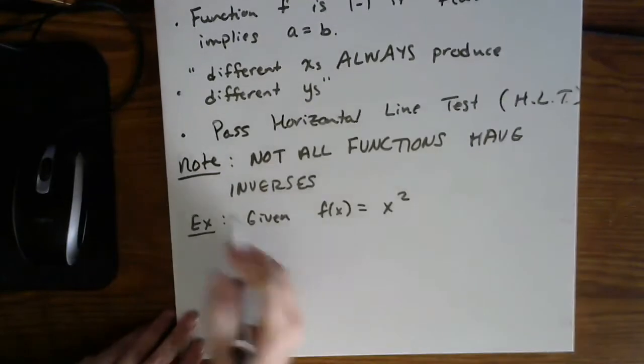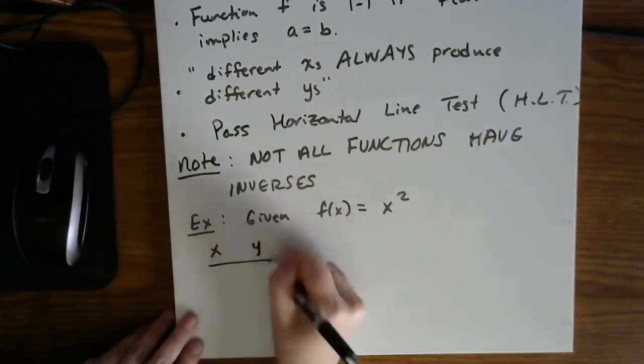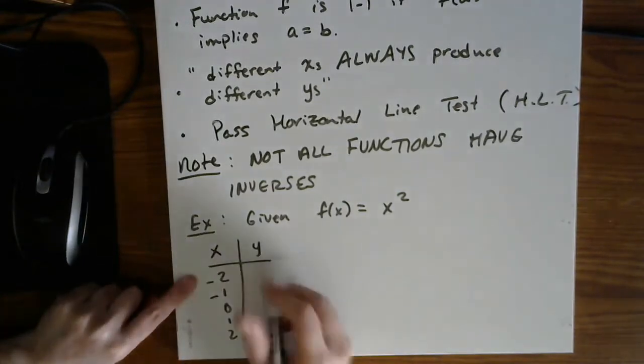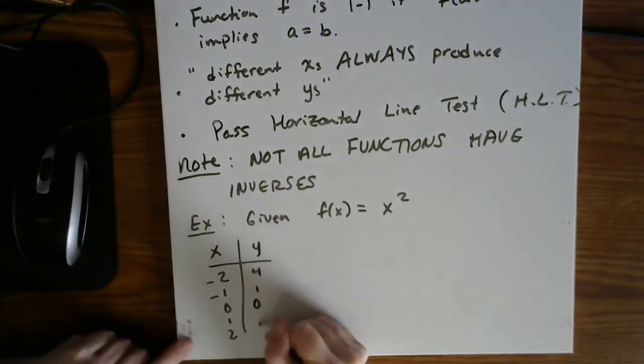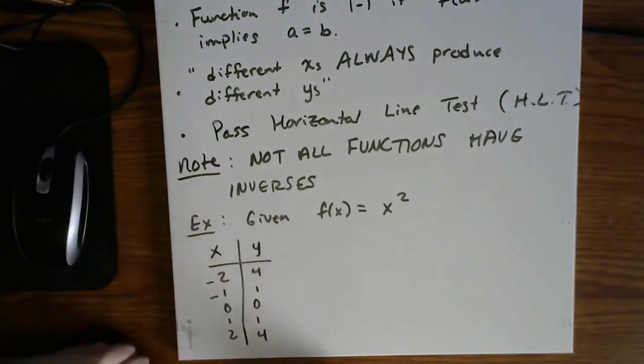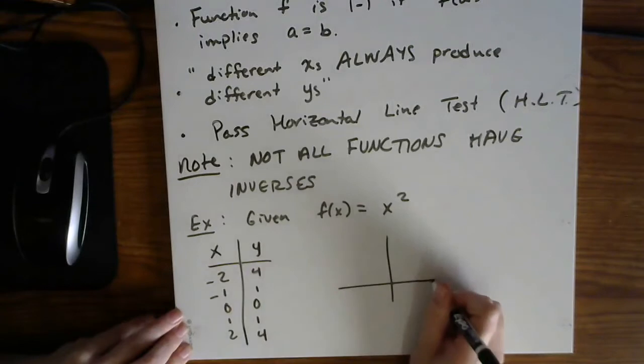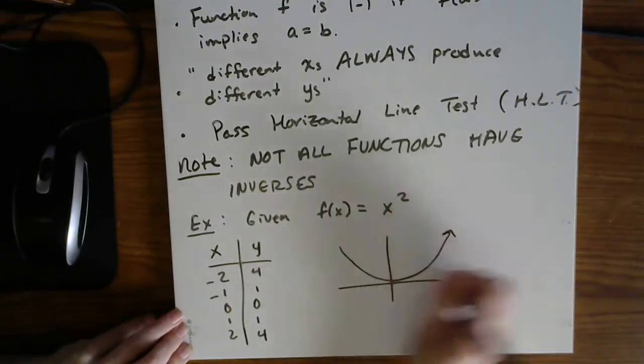Given f of x equals x squared. So first you could think about this just in terms of the table. Minus two, minus one, zero, one, and two. So I'd have four, one, zero, one, and four. Or you can think of it in terms of its graph. I'll just sketch the basic graph.